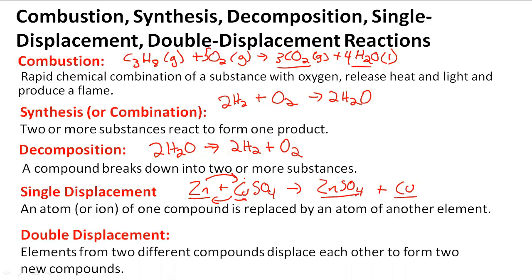Double displacement, as you can imagine, means that an element from two different compounds displace each other to form two new compounds. So in this case, let's take for example, let's make a general AB equation plus CD.